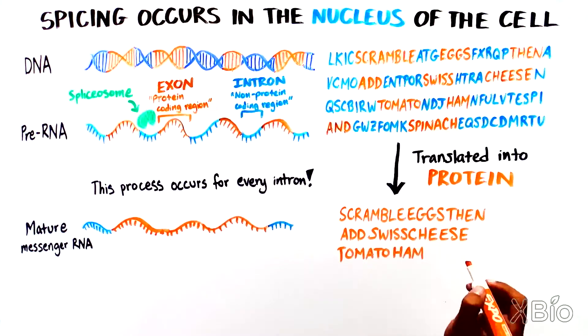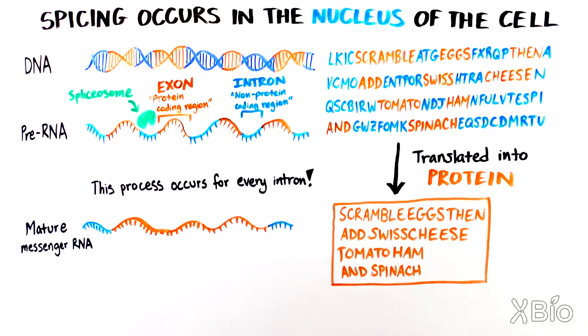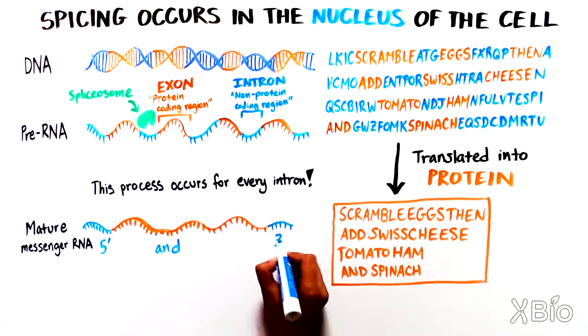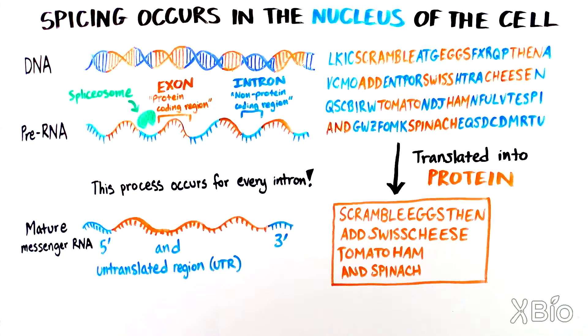You'll notice that there are also non-protein-coding regions on opposite ends of the mature mRNA. These are called the 5' and 3' untranslated regions, UTRs. Since these regions are not removed from the pre-mRNA during RNA splicing, they are not considered introns.